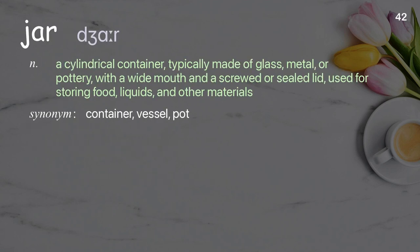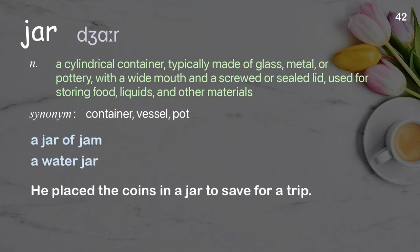Jar: a cylindrical container, typically made of glass, metal, or pottery, with a wide mouth and a screwed or sealed lid, used for storing food, liquids, and other materials. He placed the coins in a jar, to save for a trip.